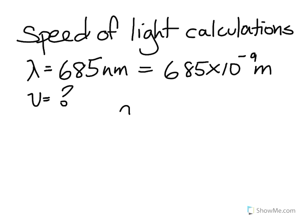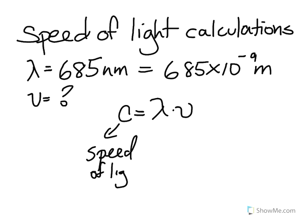Well, from lecture, we know that C is equal to lambda times nu. C happens to be the speed of light. It's the speed of light, which is a constant in a vacuum.